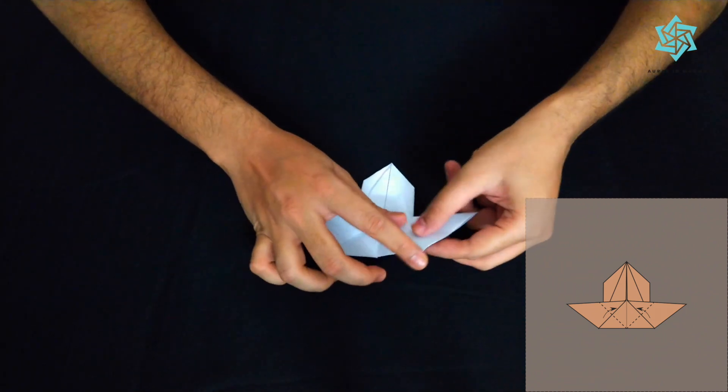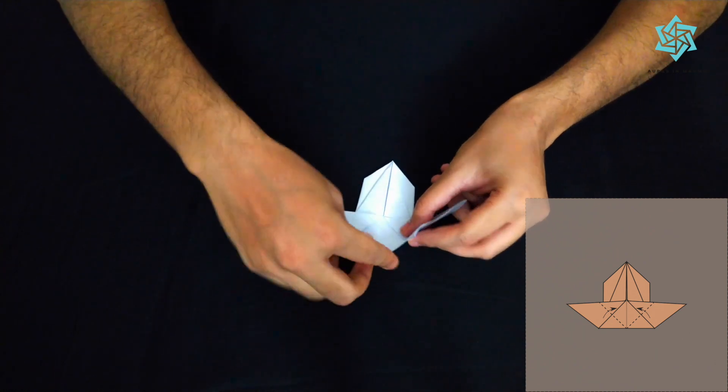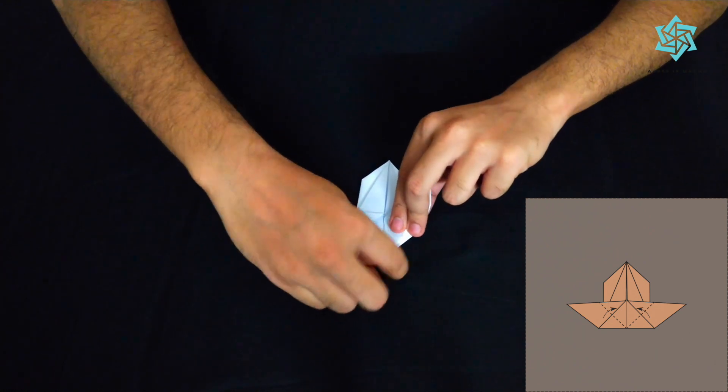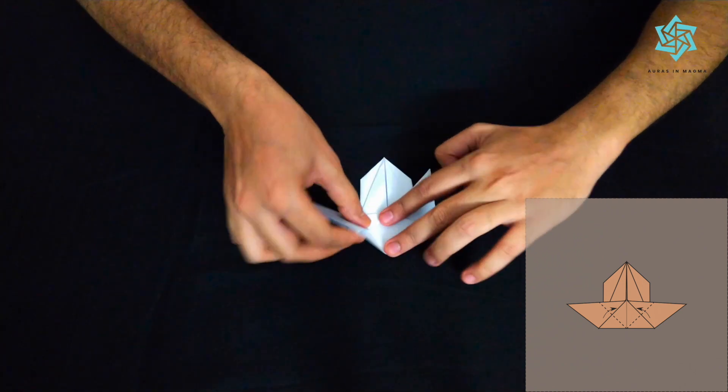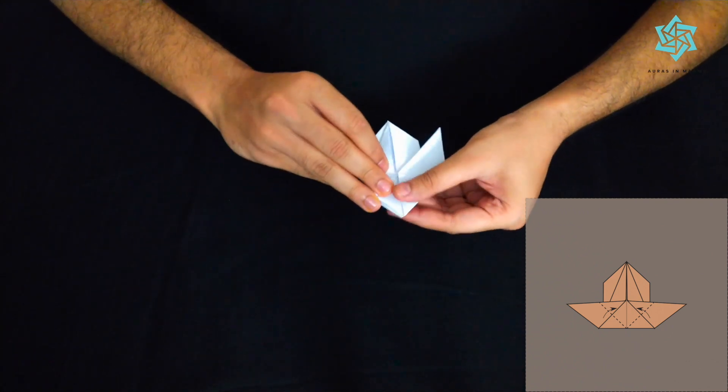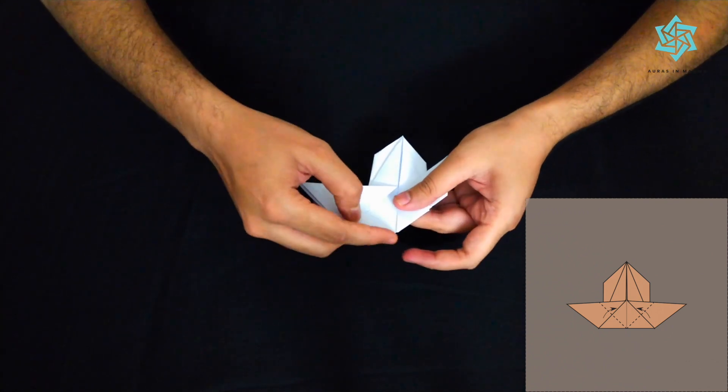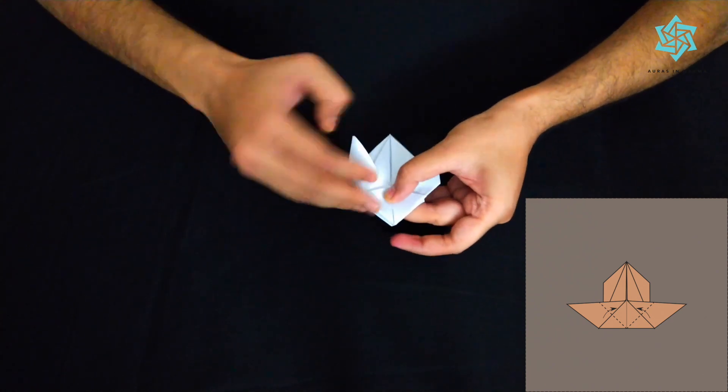With this what we'll do is this edge we'll take it and we'll fold it on this half line. And we'll complete the crease. Similarly for this edge we'll take it and fold it on this half line. So you see I've taken this edge and this half line which is there I'll fold it here.